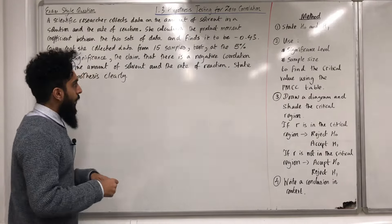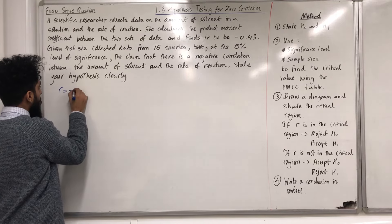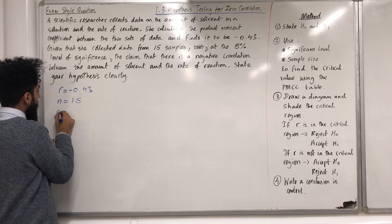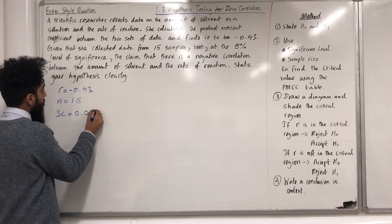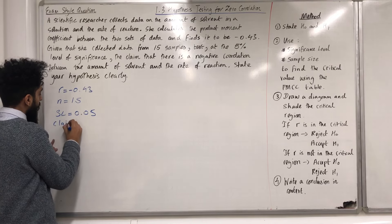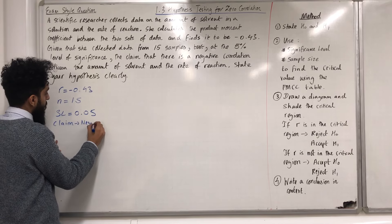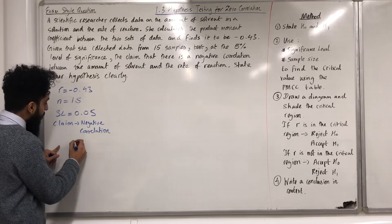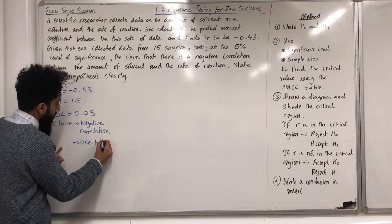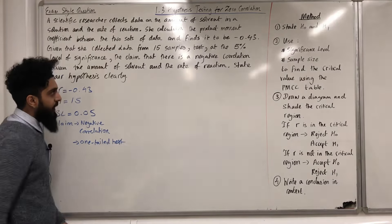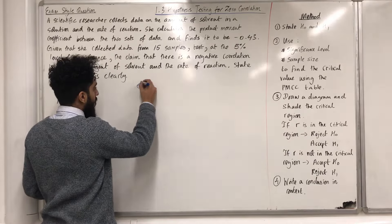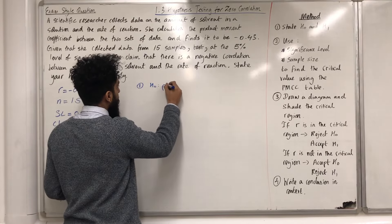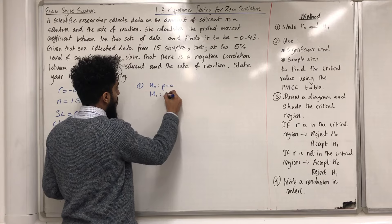So what are we given? R is equal to minus 0.43, the sample size N is equal to 15, the significance level is equal to 5% which is 0.05, and the claim is that there is a negative correlation. This indicates that we have a one-tailed test. Step 1: state H0 and H1. H0 represents rho is equal to 0, and H1 represents rho is less than 0.